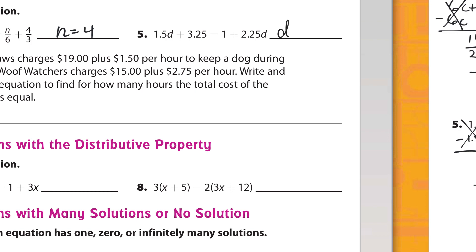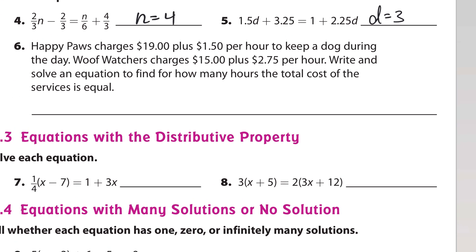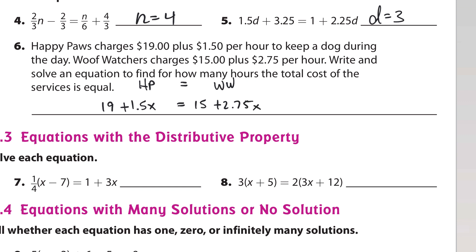Number 6: Happy Paws charges $19 plus $1.50 per hour to keep a dog during the day. Wolf Watchers charges $15 plus $2.75 per hour. Write and solve an equation to find how many hours the total costs are equal. For Happy Paws: 19 plus 1.5h. For Wolf Watchers: 15 plus 2.75h. Set them equal to each other.